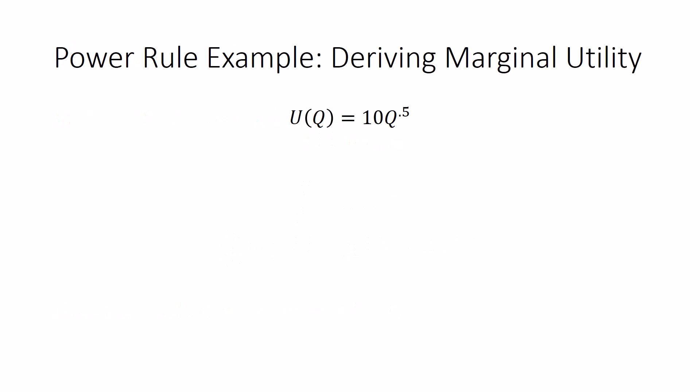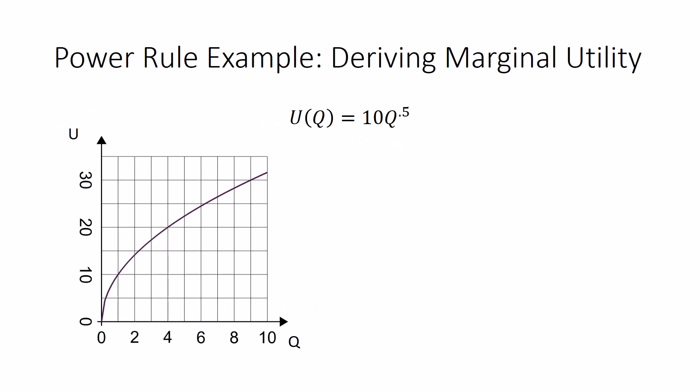Okay, power rule, we're going to derive marginal utility from this function: u(q) equals 10q to the 0.5, or 10 square root of q, whichever way you prefer. So it looks something like this. Can we find its rate of change? Can we find its slope? Now, you might be thinking like, no, it's not a straight line. Well, there's a slope at every point. It just, the slope depends on q.